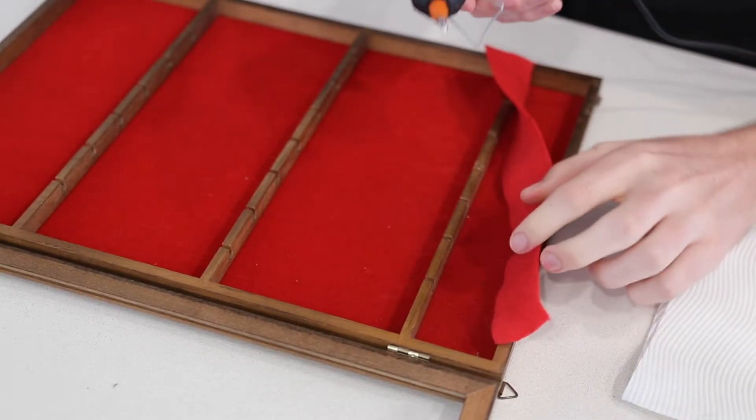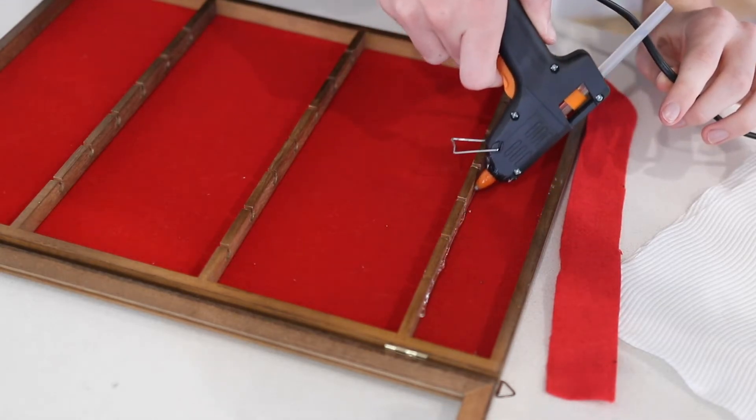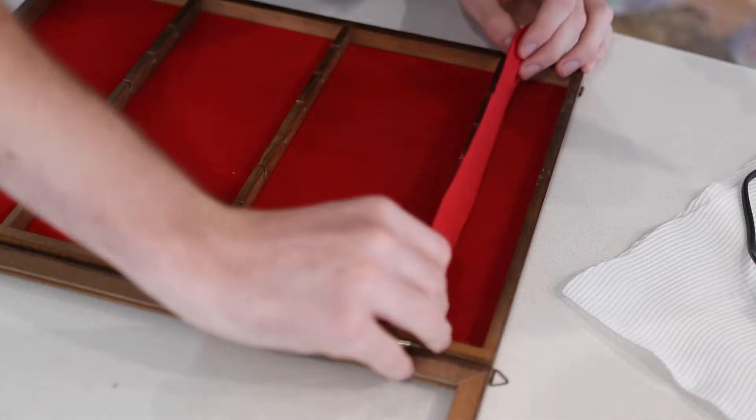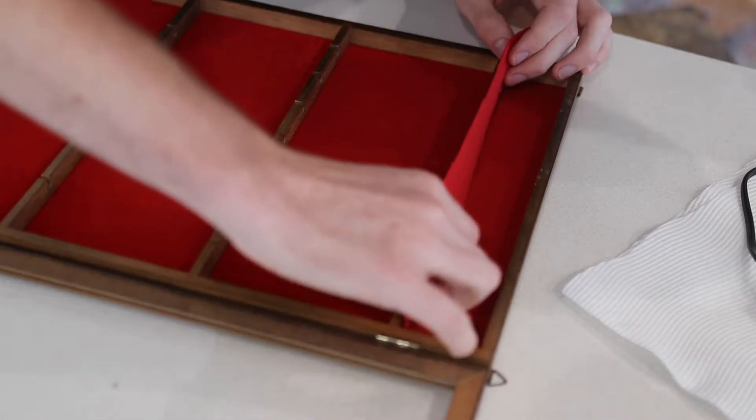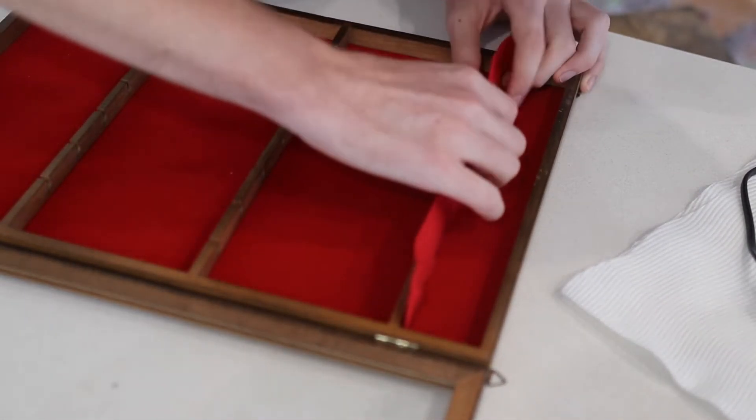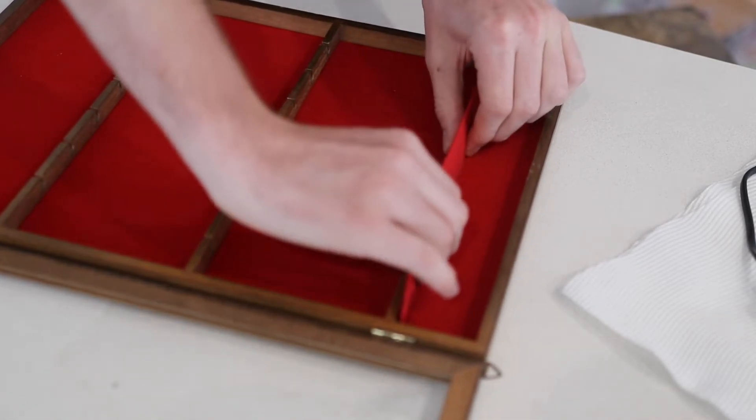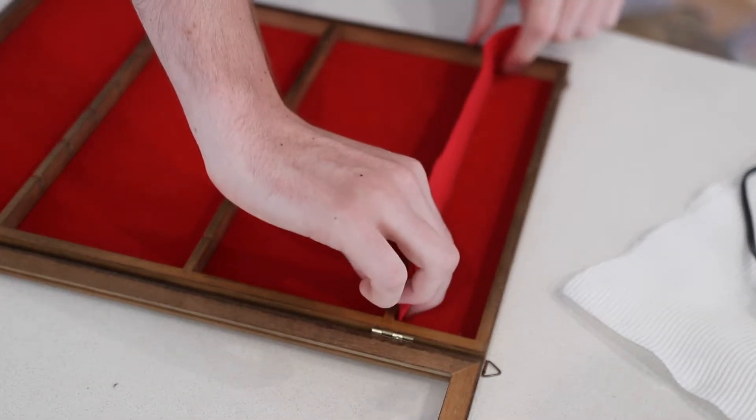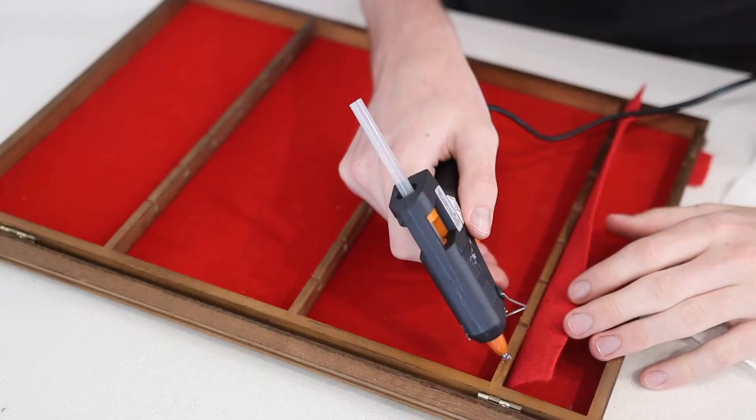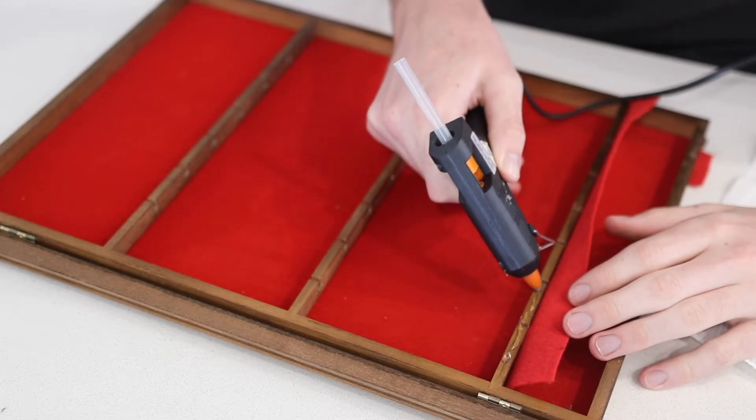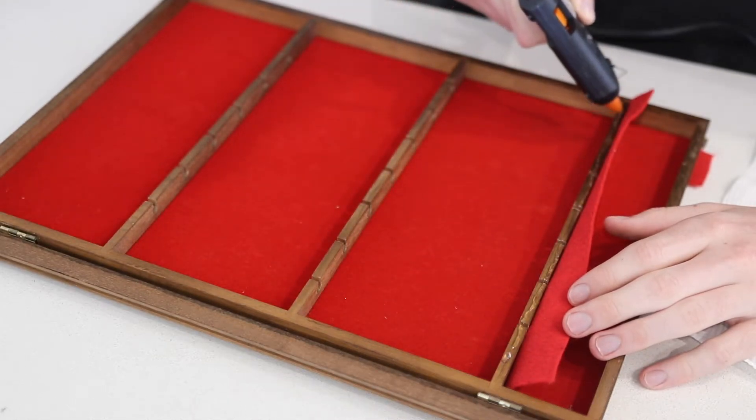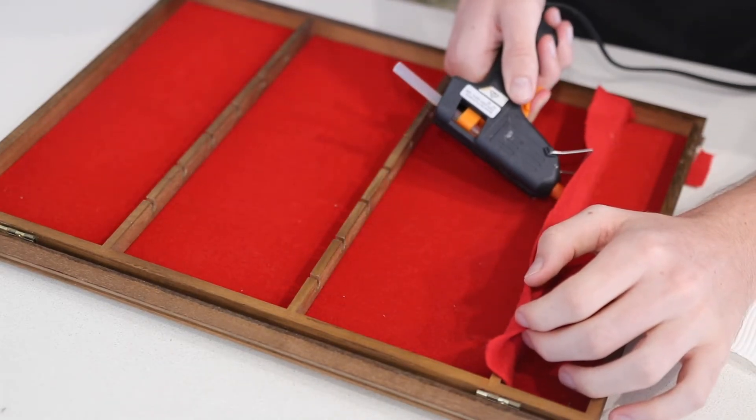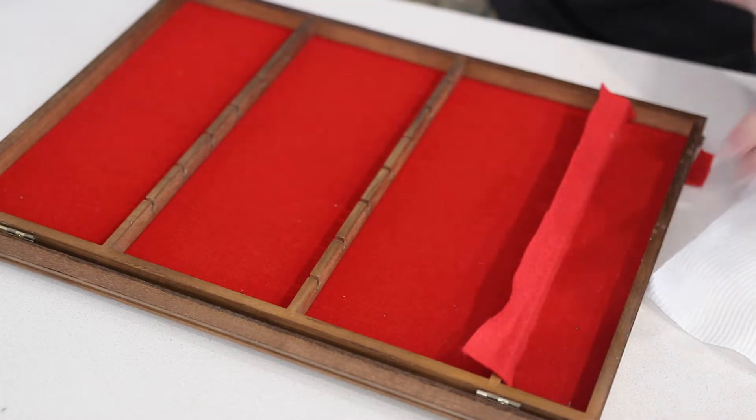Alright, so first along the top of the insert. Then quickly put the felt on before the glue cools down. Then once again along the top. I'm not going to worry too much about those cutouts in the wood - the felt will cover those up quite nicely. And then again on the bottom side and just fold that over.